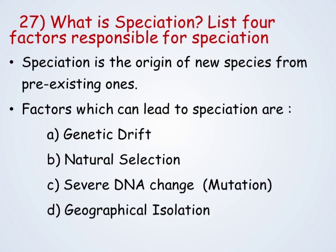What is speciation? These are the factors responsible for speciation. Speciation is the origin of new species from a pre-existing one. The factors are genetic drift, natural selection, severe DNA changes (i.e., mutation), and geographical isolation. These are the factors which can lead to speciation.